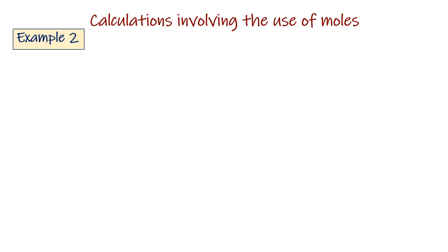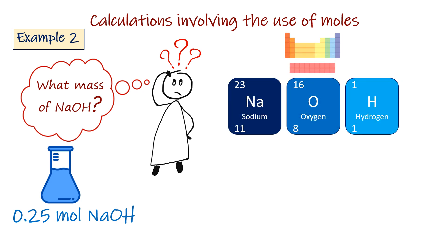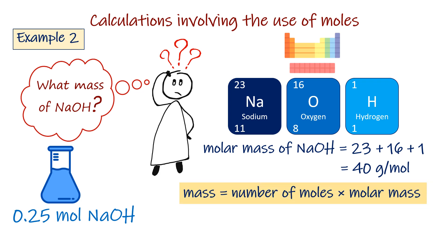Example 2. What mass of sodium hydroxide is present in 0.25 mole of sodium hydroxide? First you need to calculate the molar mass of sodium hydroxide using your periodic table. The molar mass will be 23 plus 16 plus 1, which is 40 grams per mole. Then calculate the mass of sodium hydroxide using the same formula that we used in example 1. The mass in 0.25 moles of sodium hydroxide is 10 grams.